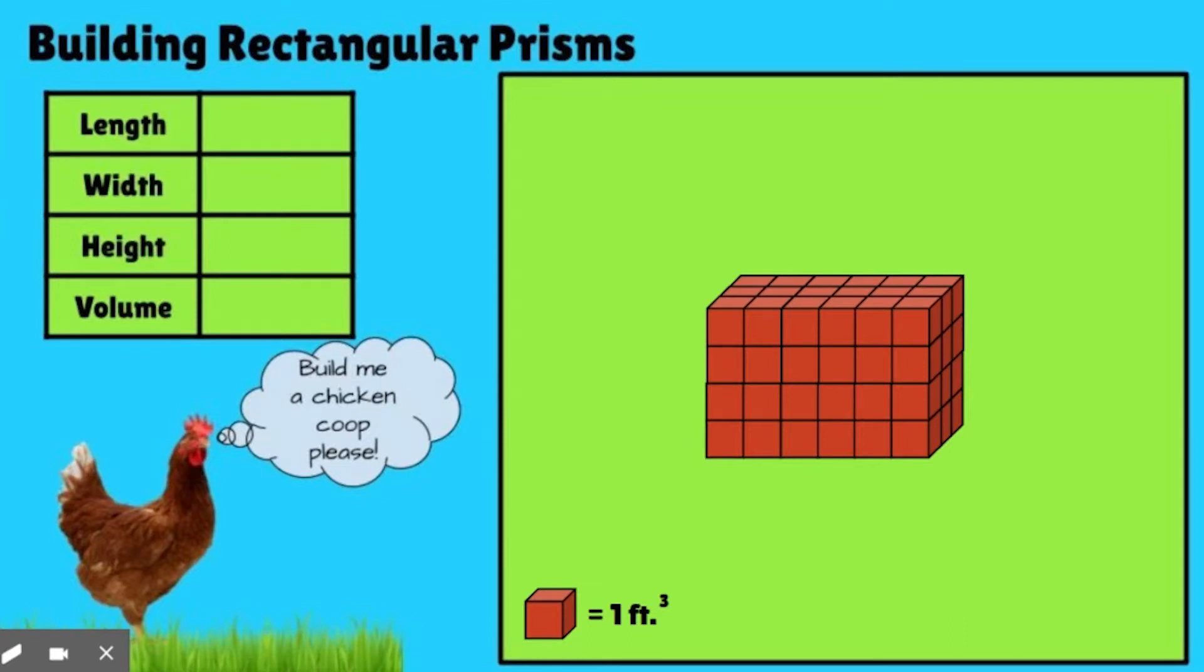All right, hopefully you paused and saw this. Well, we can see that the length of this figure is going to be six feet. The width of this figure is going to be three feet. And the height of this figure is going to be four feet. So we can say that six times three is 18 and 18 times four is 72. So this figure, this coop would have a volume of 72 cubic feet. That's basically it. Because remember, volume is length times width times height, or six times three times four.